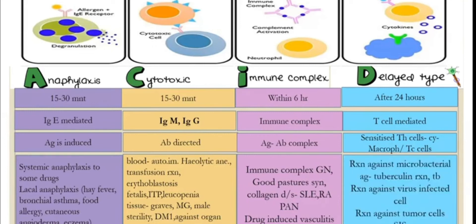For Type 4 delayed reactions, the key example is the tuberculin reaction against mycobacterial antigen. In the tuberculin test, the rash is measured after one to two days — confirming it is a delayed reaction. The tuberculin reaction is very important and is frequently asked in exams.